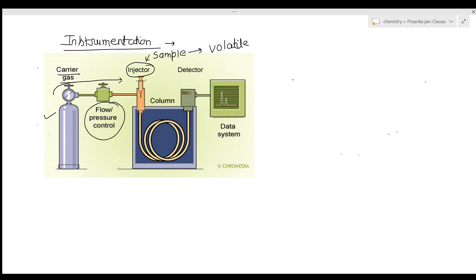The pressure of the gas is controlled at the flow/pressure control unit. The sample injected contacts the mobile phase and is carried to the chromatographic column — which may be either a packed column or a capillary column — where separation occurs.